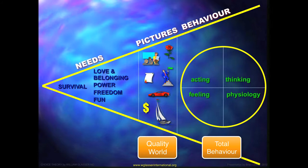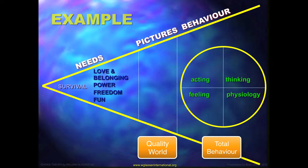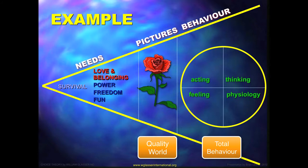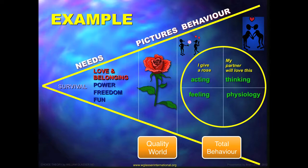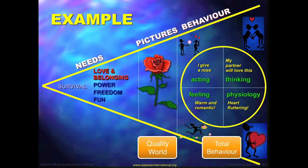This idea has many implications for the way we live and for therapy. For example, if my love and belonging need is running low, I might think of ways to improve that — like giving a flower to someone I love. Other people might choose chocolates or a holiday. I choose a picture from my personal album, then act: giving the rose is the doing; I'm thinking my partner will love this; I'm feeling warm and romantic; physiologically, my heart is fluttering. A totality arising from the action of giving a flower to someone I love.